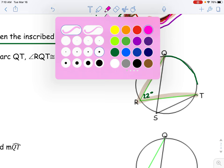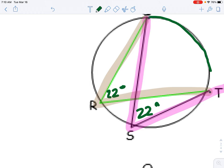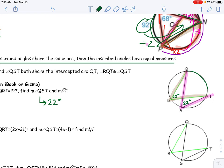They both intercept QT, so I can actually easily say, bada bing bada boom, 22 degrees right there. And then the measure of QT is just times by two, which will be 44 degrees. Super easy, barely an inconvenience.